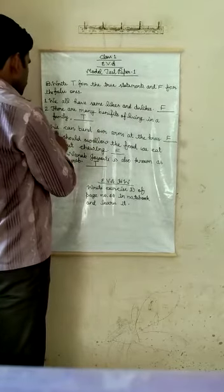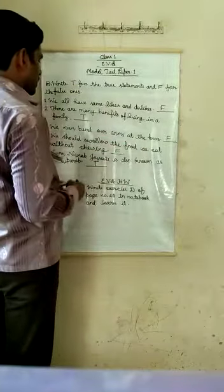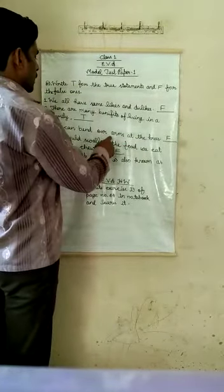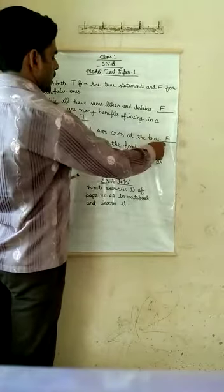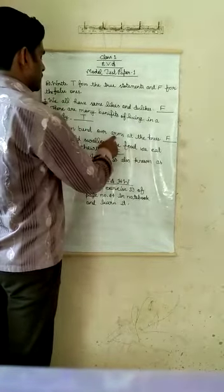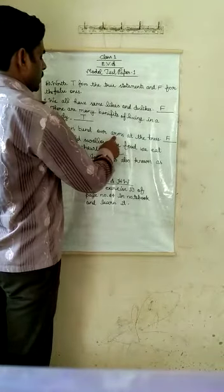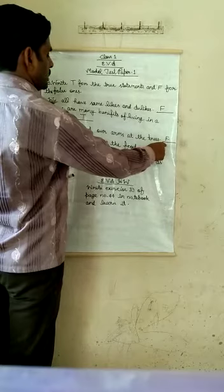Third, we can bend our arms at the knees. Knee is an organ of leg, but arm is for hands. So this is false statement, write F here for false.